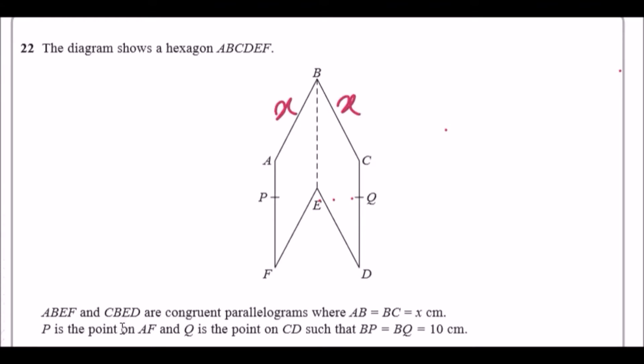P is on the point AF and Q is on the point CD such that BP and BQ are 10 centimeters. So if you just draw a dotted line that connects to P from B and a dotted line that connects to Q, we have identical lengths of 10.